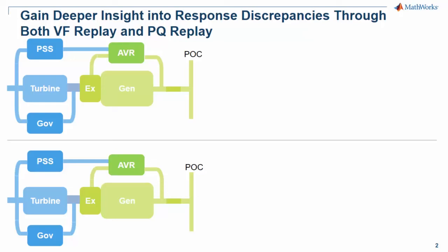For online performance monitoring, data replay involves exciting the plant model through physical measurements of voltage or current at the grid point of connection. It's common to consider voltage, frequency, active power, and reactive power as the four measurements necessary to perform power plant model validation.